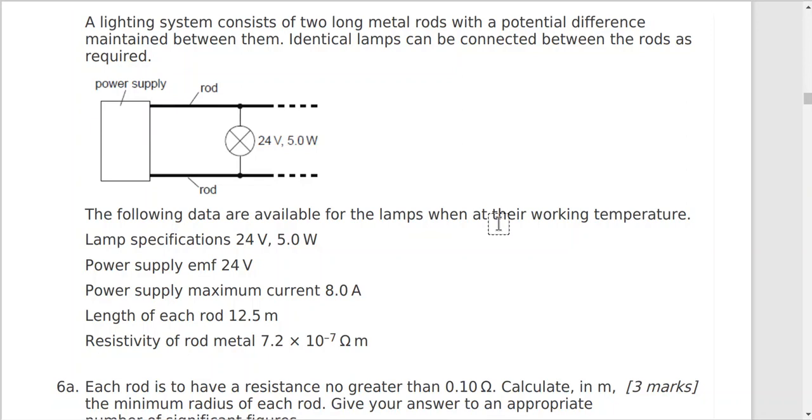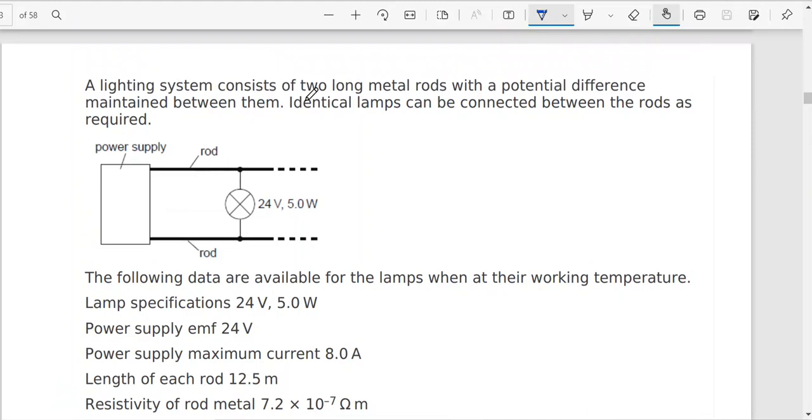This is a high-level question. That doesn't mean it's not also on the standard level in both, but it has some extra questions for the high-level students. A lighting system consists of two long metal rods with a potential difference maintained between them.